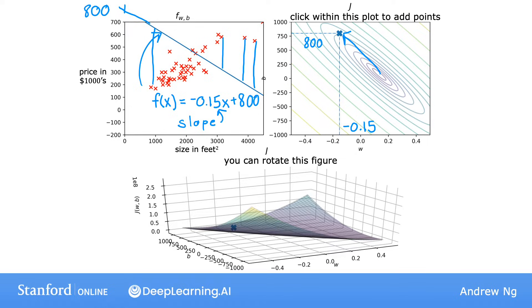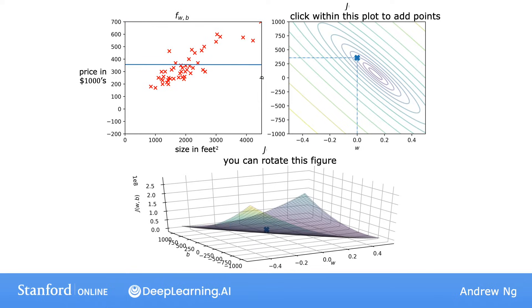Now, let's look at another example with a different choice of W and B. Here's another function that is still not a great fit for the data, but maybe slightly less bad. So this point here represents the cost for this particular pair of W and B that creates that line. The value of W is equal to 0, and the value of B is about 360. This pair of parameters corresponds to this function, which is a flat line, because f of x equals 0 times x plus 360.